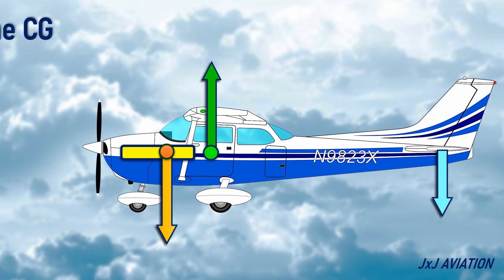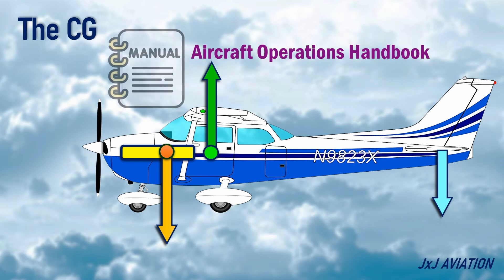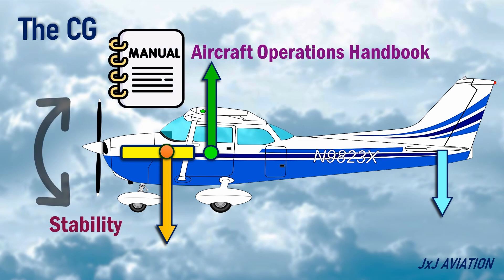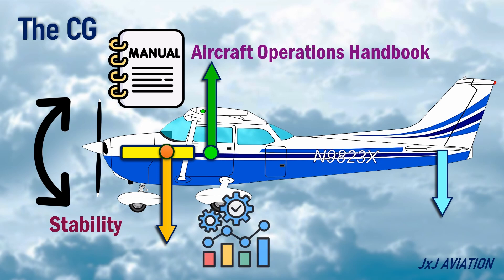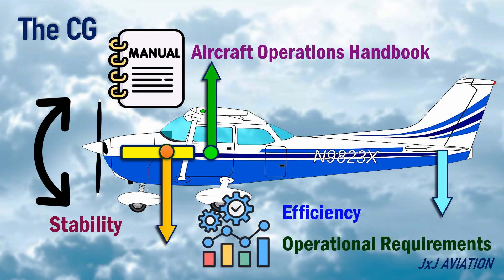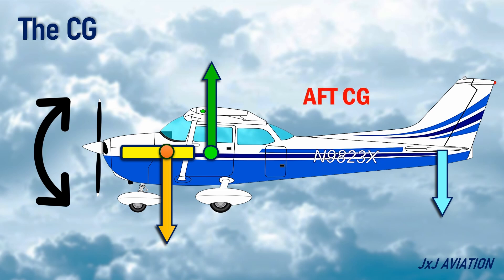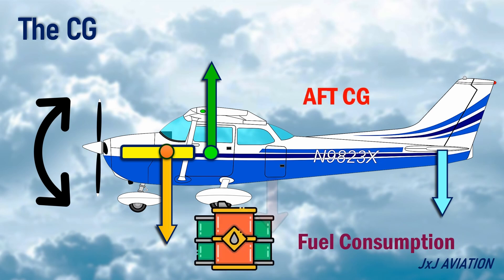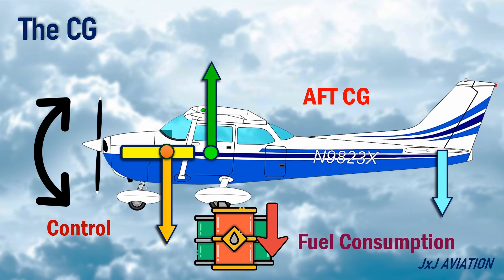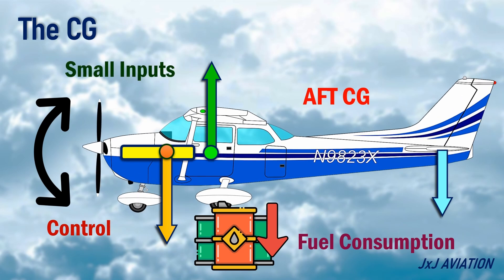The CG limits of an aircraft will be mentioned in the Aircraft Operations Handbook. Generally, a balance needs to be maintained between stability, efficiency, and operational requirements. An aft CG can be given preference because it reduces fuel consumption, provides better control of the aircraft, and longitudinal disturbances can be corrected using small inputs.